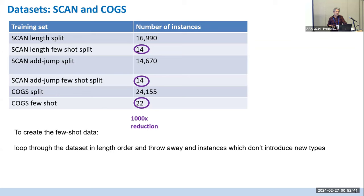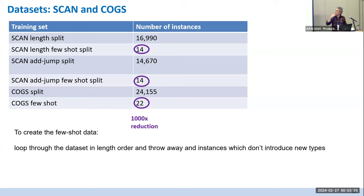We ran experiments on SCAN and COGS datasets and reduced them substantially to test few-shot learning. For SCAN we reduced from about 17,000 down to 14 examples; for COGS from 24,000 down to 22 examples — roughly a 1,000x reduction. We sorted the dataset by input length and parsed using an off-the-shelf grammar — we're not learning the grammar — and looped through, keeping only instances that introduced a new type not seen in previous instances.